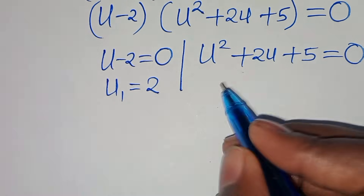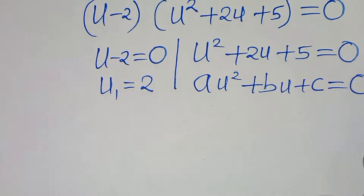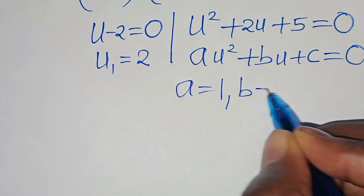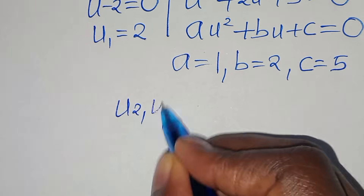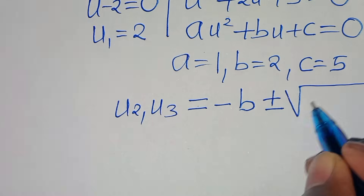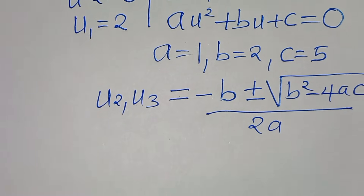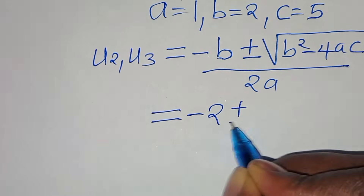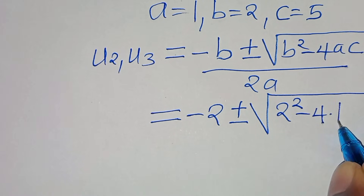The second part is a quadratic equation of the form au² + bu + c = 0. From this quadratic we have a = 1, b = 2, and c = 5. We solve for u₂ and u₃ by applying the quadratic formula: u = (−b ± √(b² − 4ac)) / (2a). Substituting the values of a, b, and c, we have (−2 ± √(2² − 4·1·5)) / (2·1).